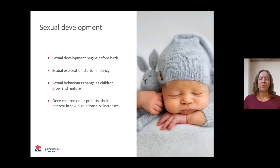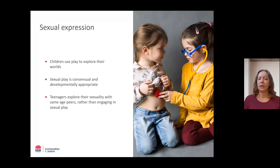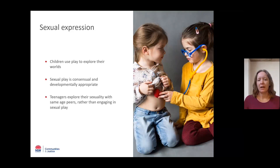By being aware of what is developmentally expected, you'll be better able to identify concerning sexual behaviours. Kids display their emerging sexuality in a range of ways. For prepubescent kids, sexual play supports this development in a positive way. Sexual play is a consensual experience between children of similar ages. It might include 'doctor games' where a child who plays the doctor looks at or touches a peer's body parts, as well as 'you show me yours and I'll show you mine' games.